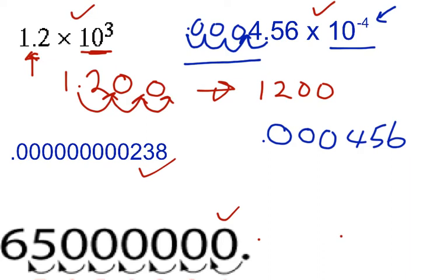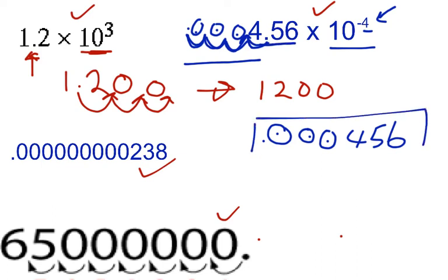So, once again, what did we just do? We moved the decimal four places to the left. How do we know to do that? Because we have a 4 right there and a negative exponent. So we get 1, 2, 3, 4 — there's our decimal. We fill these spaces in with zeros — those are three zeros — and 4, 5, 6 must be in our final answer. So the answer is 0.000456, which was our original number.